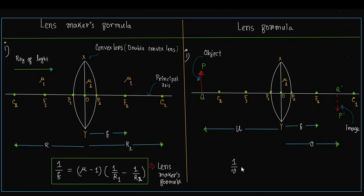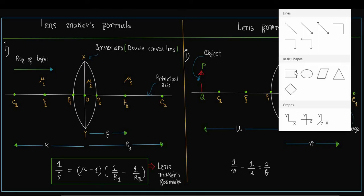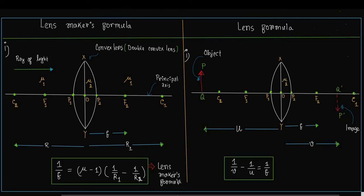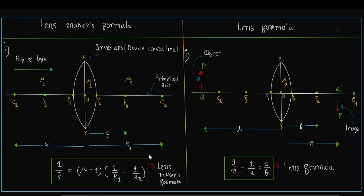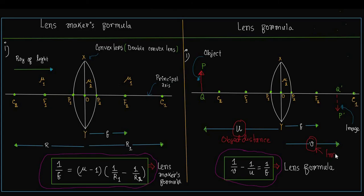On the right-hand side we can write the Lens Formula, which is 1/v − 1/u = 1/f, where v is the image distance, u is the object distance, and f is the focal length. So the Lensmakers Formula is 1/f = (mu − 1)(1/R1 − 1/R2), and the Lens Formula is 1/v − 1/u = 1/f. Here mu = mu2/mu1, which is the relative refractive index of the lens with respect to the surrounding medium.